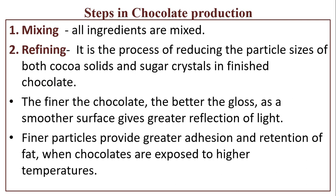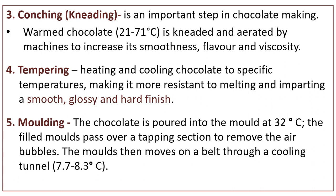Steps in chocolate production. Mixing: all ingredients are mixed. Refining: it is the process of reducing the particle sizes of both cocoa solids and sugar crystals in finished chocolate. The finer the chocolate, the better the gloss, as a smoother surface gives greater reflection of light. Finer particles provide greater adhesion and retention of fat when chocolates are exposed to higher temperatures.